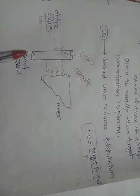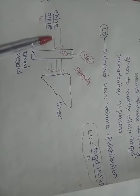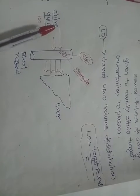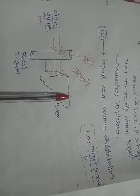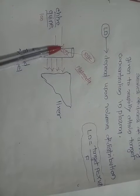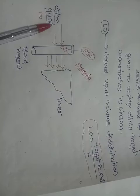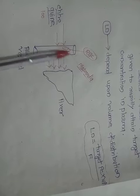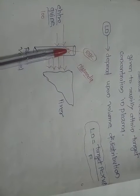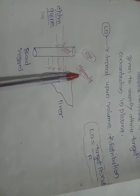We will take the example of chloroquine, which has the highest distribution — more than 13,000 liters of volume of distribution. Chloroquine is an anti-malarial drug used in malaria to kill the plasmodia sitting inside the RBCs, which are present in the blood vessels.